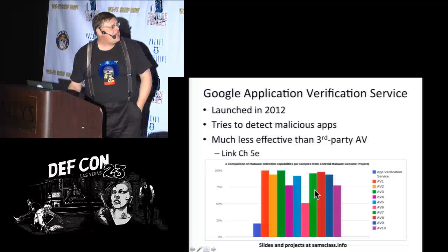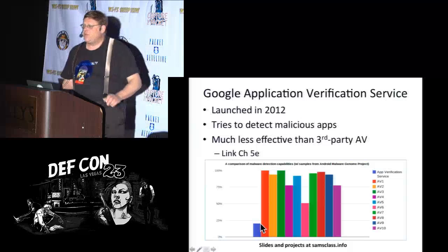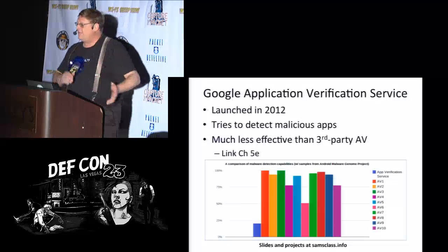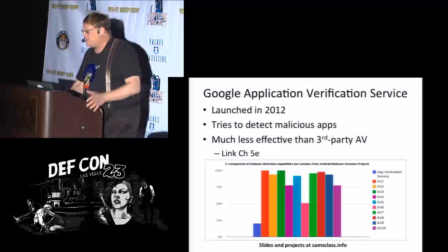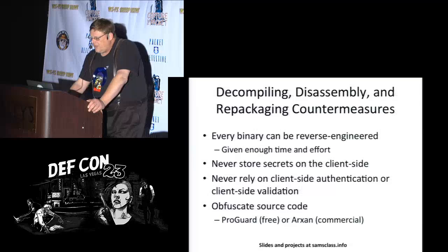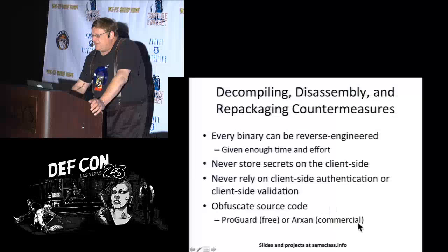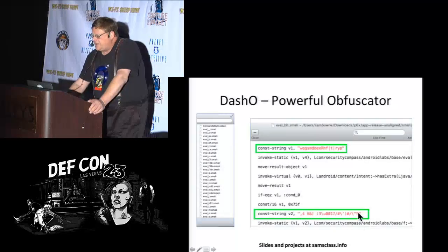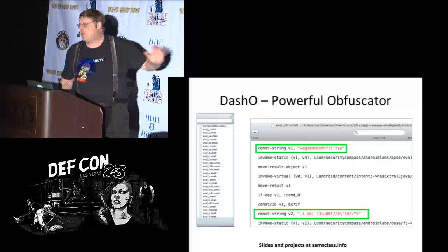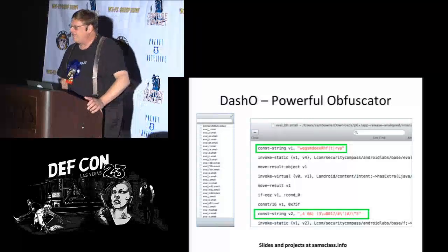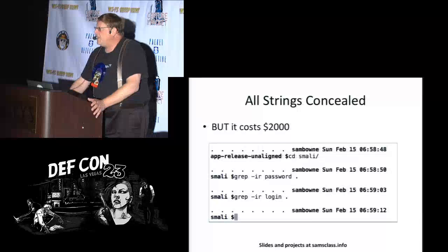Here are antivirus products for Android and their effectiveness — the Google Play Store scanner and Microsoft's antivirus are essentially garbage. You can prevent these things: don't store secrets on the client side, obfuscate your source code. Dash-O changes all variables to long garbled messes and would stop a casual attacker. Arxan is very expensive but claims layers of protection. That's $2,000 for Dash-O.